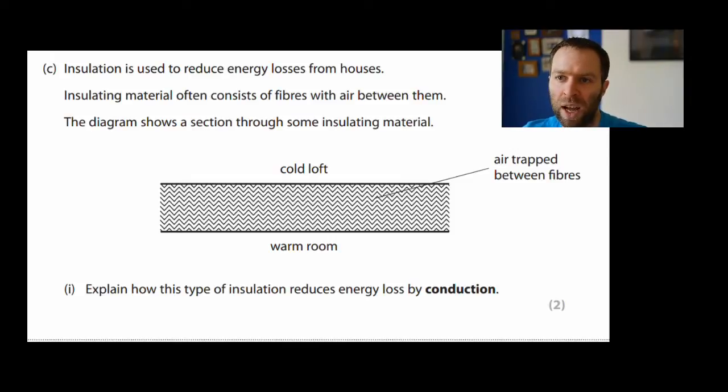What we're going to do is talk about a few questions and what the answer schemes are generally looking for. The question about cavity insulation was from January 2014 paper one. It talked about insulation being used to reduce the amount of energy loss from houses, and this is achieved with trapped air. They mentioned trapped air in the question - that's really important in the mark scheme because if you talk about trapped air without giving it context, you're not going to get the mark. The question says explain how this type of insulation reduces energy loss by conduction.